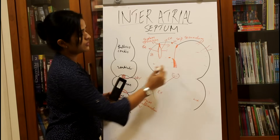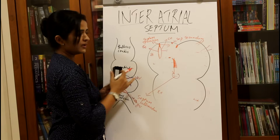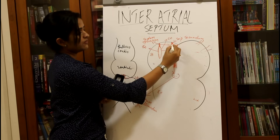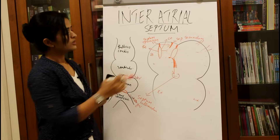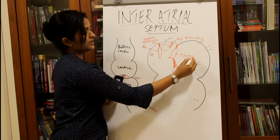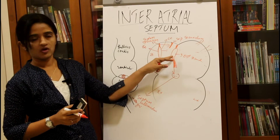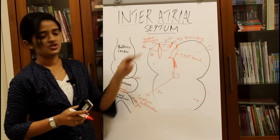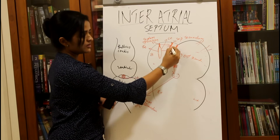The second defect is the ostium secundum defect. Here, the ostium primum closes normally, and an opening forms in the upper part of the septum primum, but the septum secundum does not completely overlap the ostium secundum. This condition is called the ostium secundum defect of the inter-atrial septum.